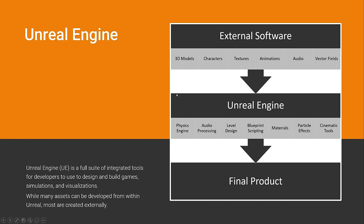After importing all these assets with Unreal Engine, you can use the physics engine, audio processing, level design, and Blueprint scripting to create more functionality — for example, making a texture change colors or react depending on some gameplay mechanic. So Unreal Engine is a full suite of integrated tools for developers to design and build games, simulations, and visualizations. While many assets can be developed from within Unreal and this number is increasing, most are still created externally through tools like 3ds Max, Blender, ZBrush, and more.